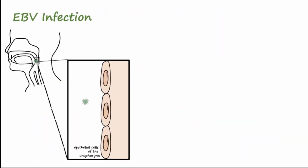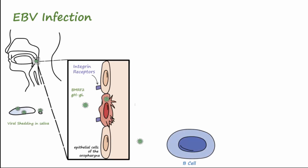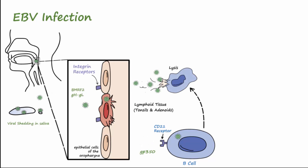EBV will first encounter the epithelial cells of the oropharynx, using the glycoproteins BMRF2 and GHGL to bind to integrin receptors on an epithelial cell. It gains entry into the cell where it replicates and causes the epithelial cell to lyse. EBV then targets B cells of the surrounding lymphoid tissue, specifically the tonsils and adenoids, where it uses its GP350 molecule binding to the CD21 receptor on B cells to gain entry into them. EBV can cause lysis of the B cells, but it more commonly establishes itself as an extra-chromosomal episome.